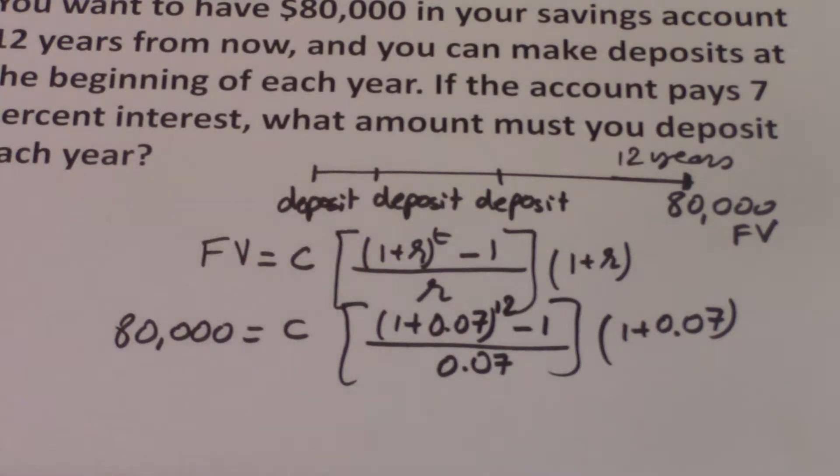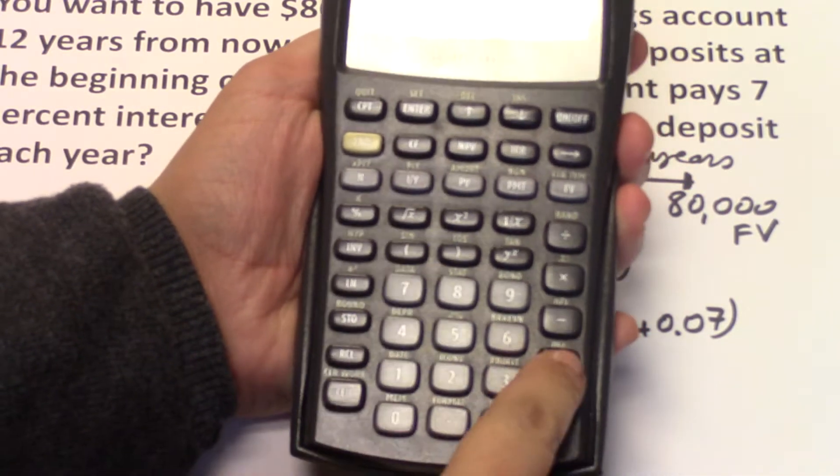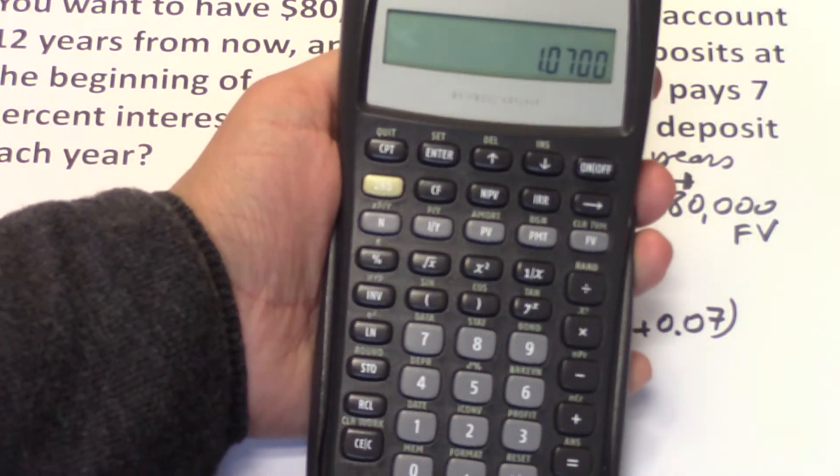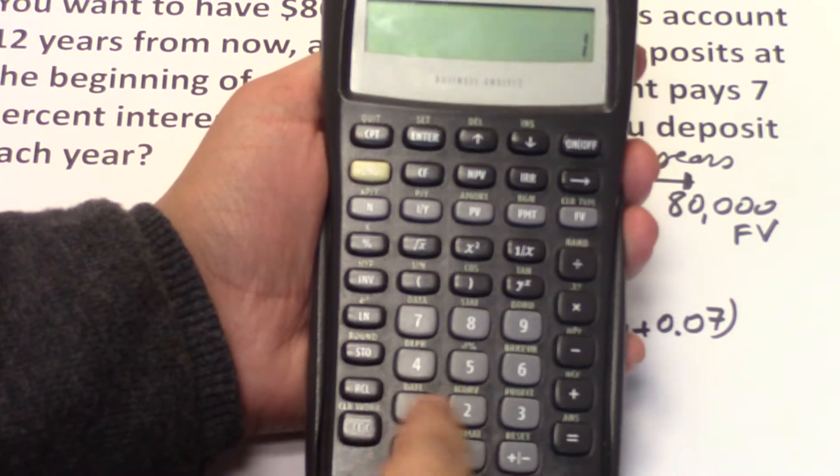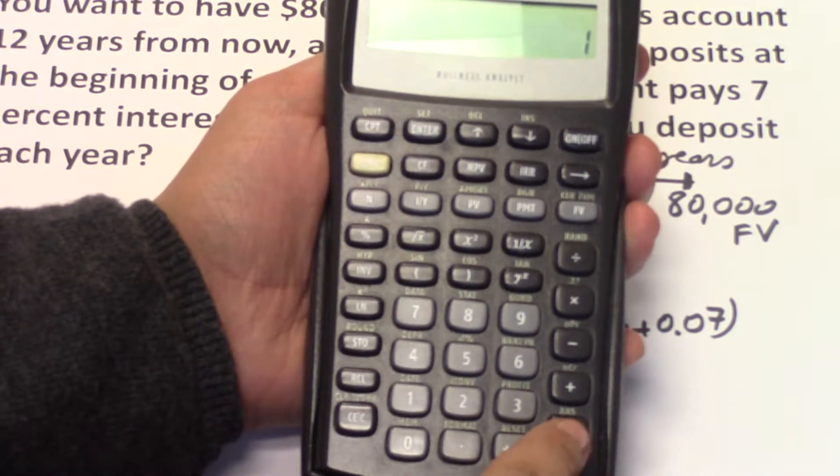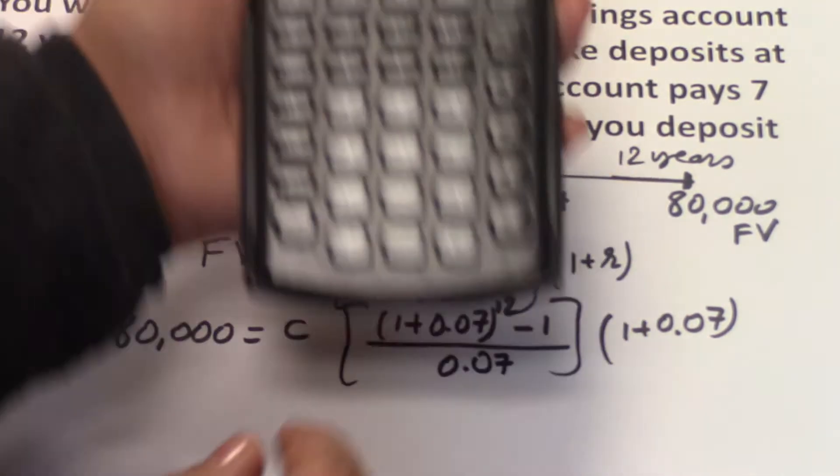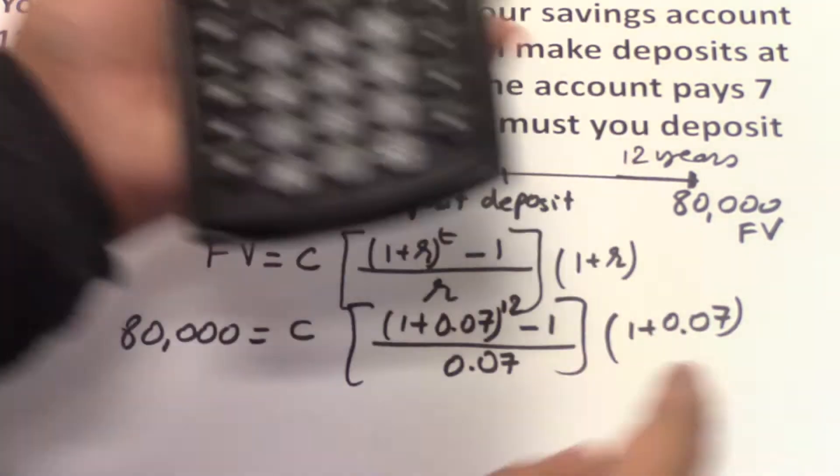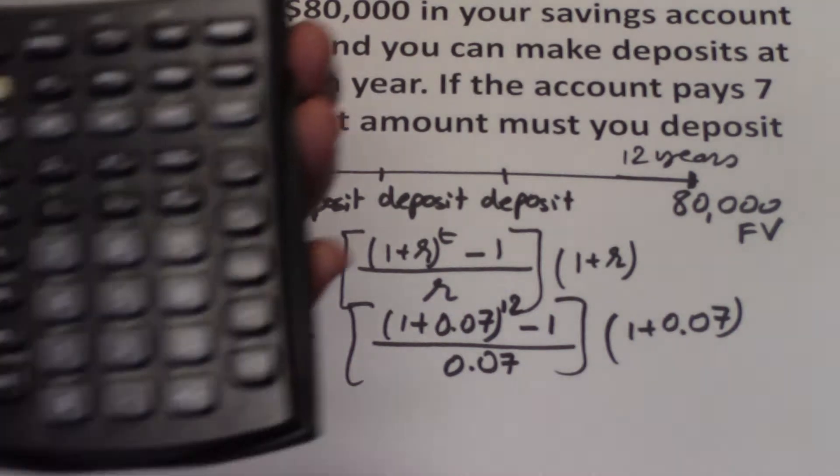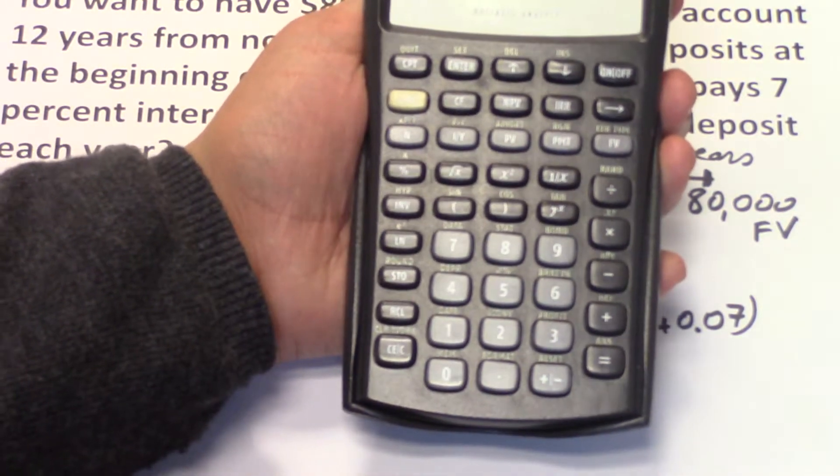So this is what we input into the calculator. 1 plus 0.07 is 1.07, and then we raise it to the power of 12 minus 1, and then we divide by 0.07. And then we multiply. So we have this number right here and we're going to multiply by 1.07, which gives us 19.14.